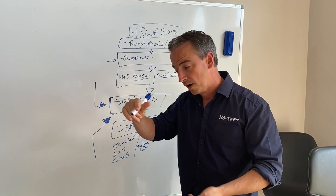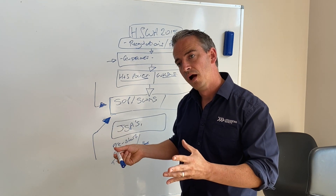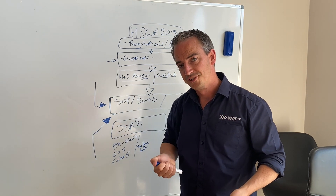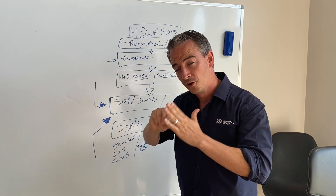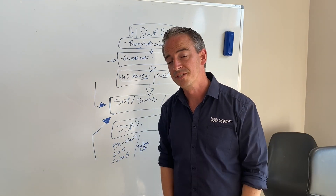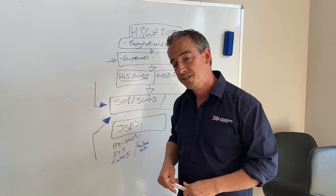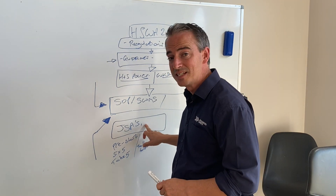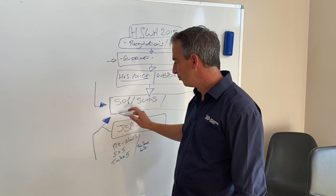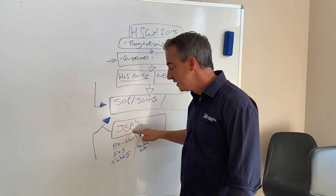The JSA is an active document used to review the differences that the workers have identified on site. It allows them to break the task down into particular steps where things are a little bit different to what they normally would do, to identify the risk levels, the controls they can implement on the job at that point in time, and then consider the residual risks. If the residual risk level meets a threshold where they are not allowed to continue, they have to go back to head office. If the residual risk levels are at a low level, they will most likely be able to continue. The key piece is that it is documented and returned to head office.